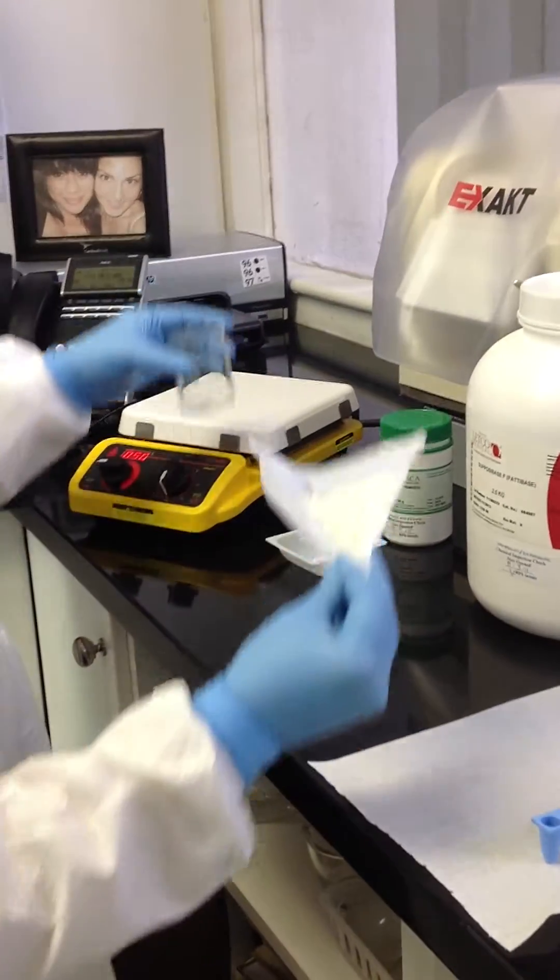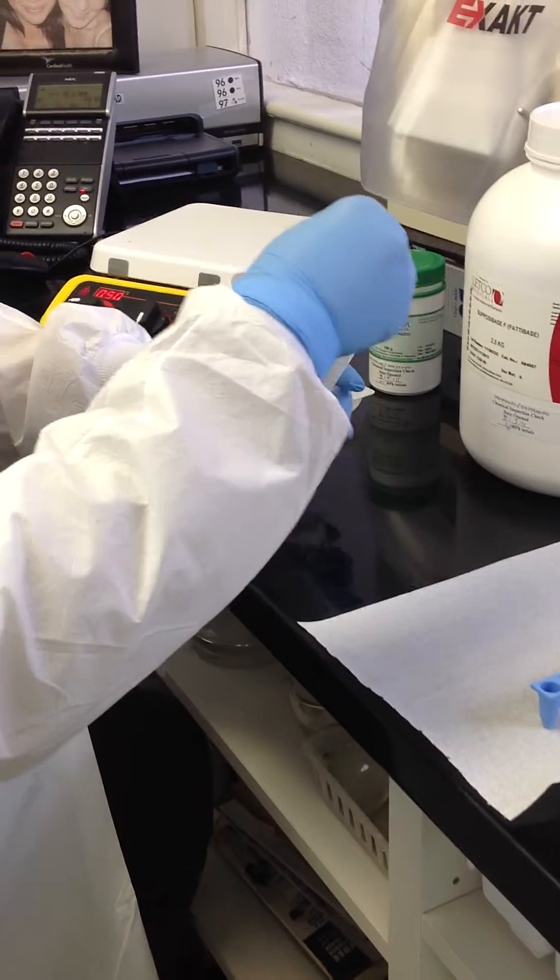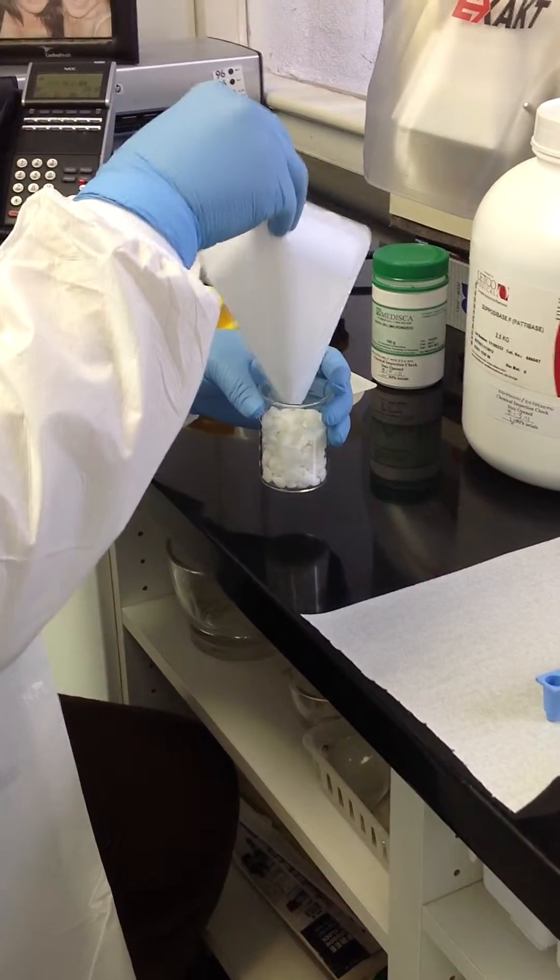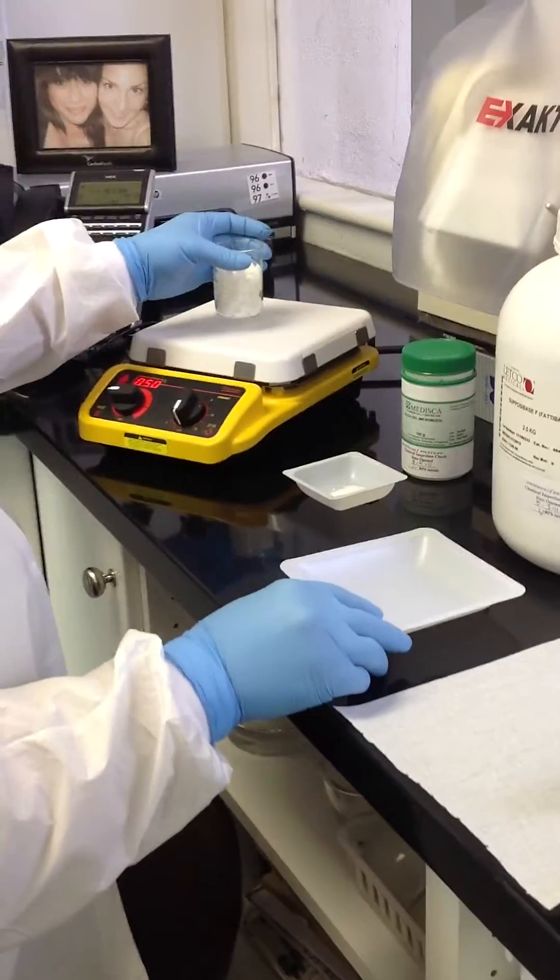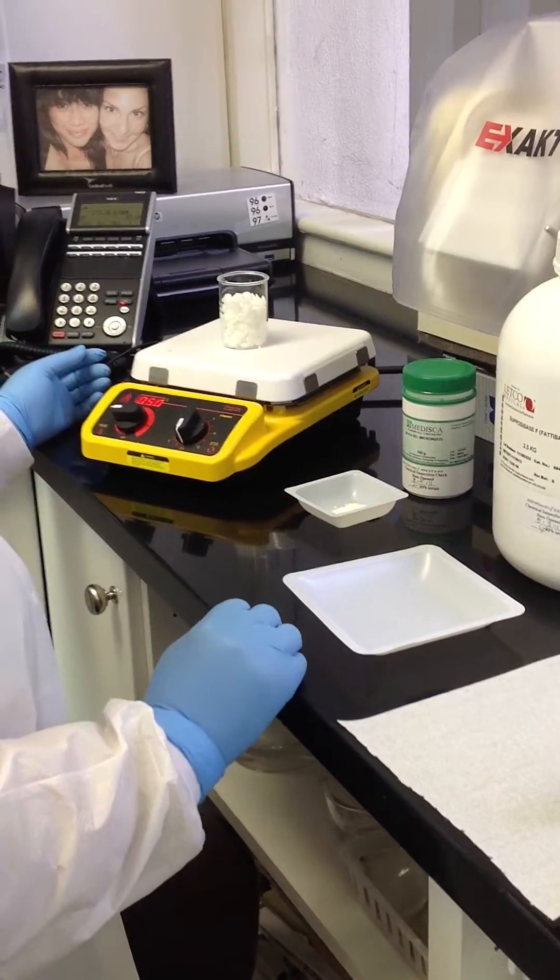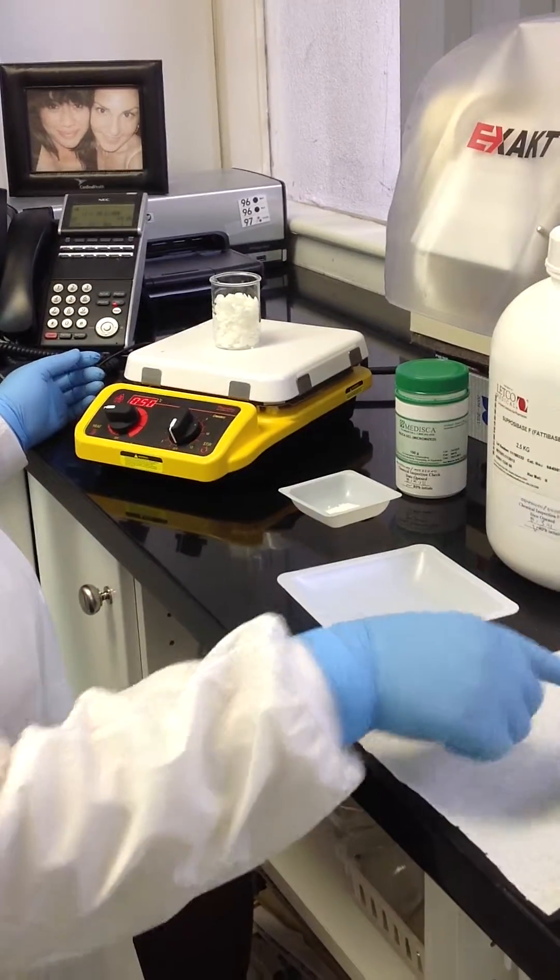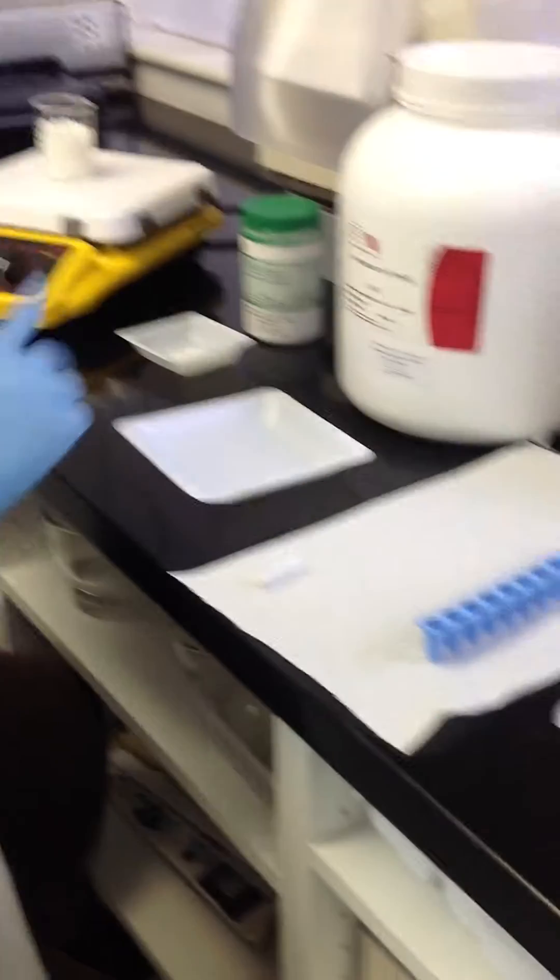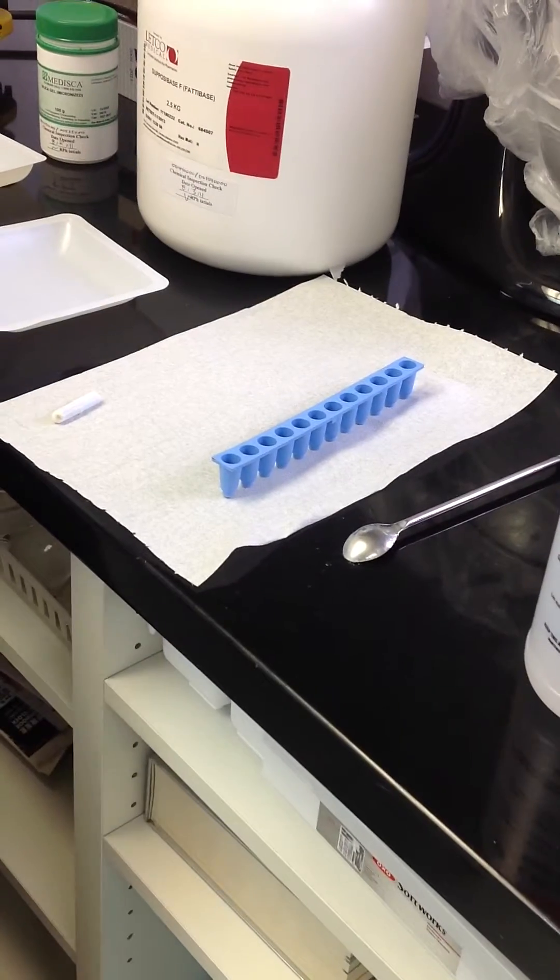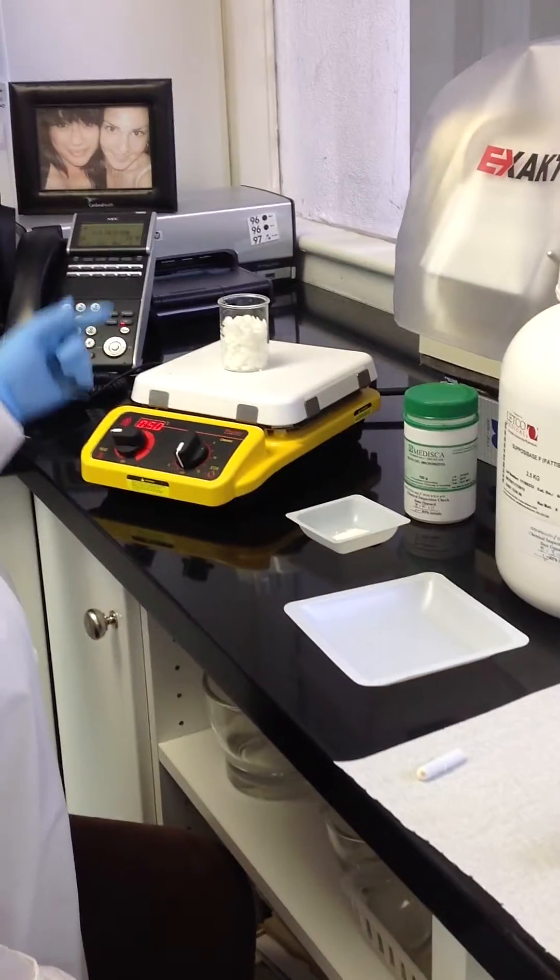You pour your suppository base into the beaker and set it here to melt. You leave your stir bar out at this point because you want to put that in once it's melted.